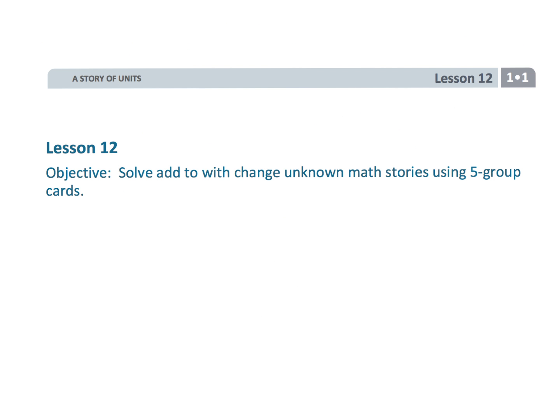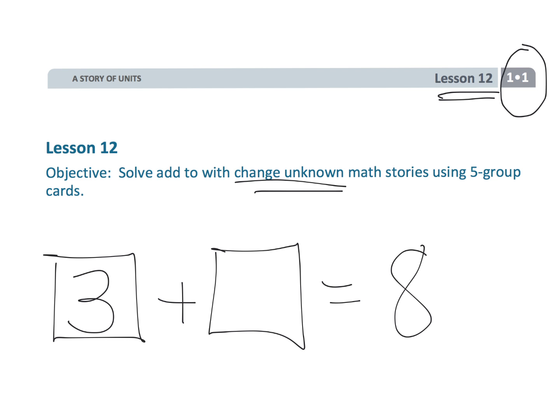And that wraps up first grade module one, lesson 12, where we've got this change unknown with some math stories. So, we might have a three plus what equals eight, and we're using the count on method to figure out what that missing value is.